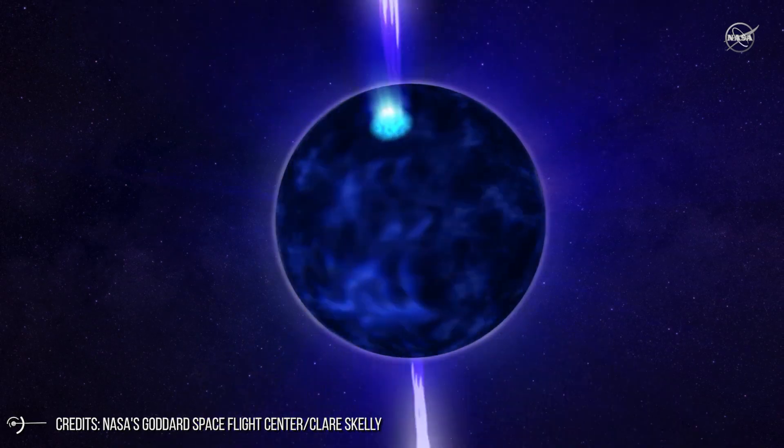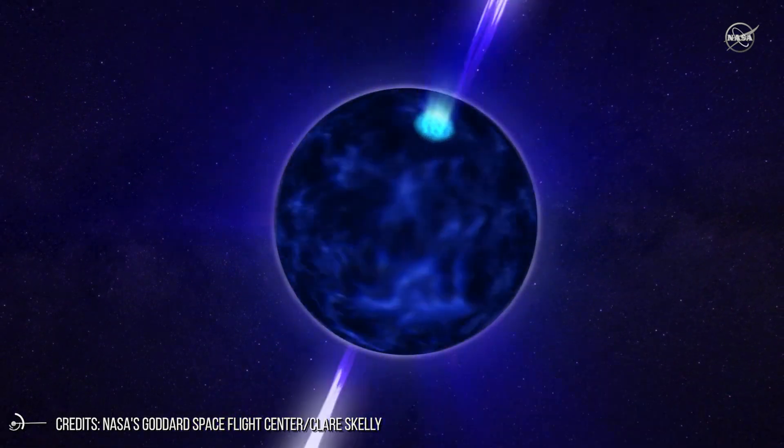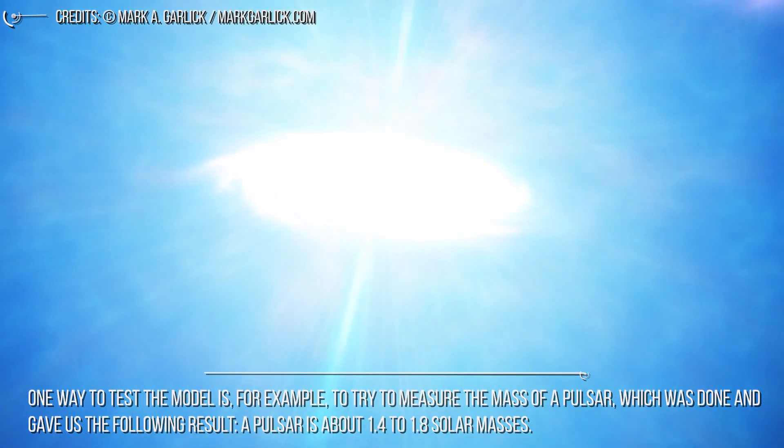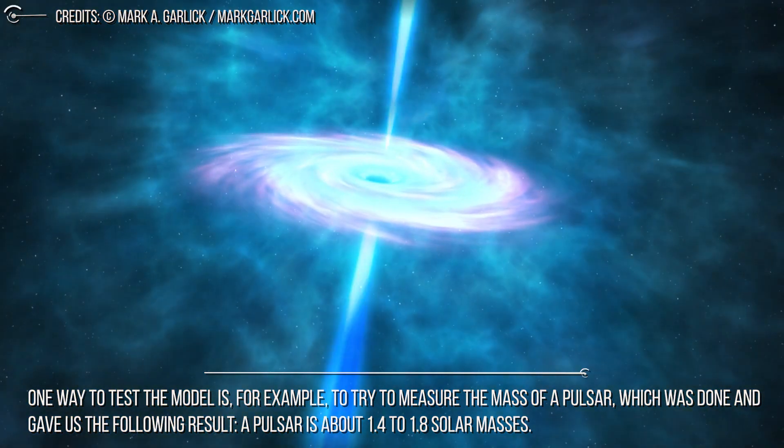But what evidence do we have that it is the correct model? This is a question that astronomers ask themselves. One way to test the model is, for example, to try to measure the mass of a pulsar, which was done and gave us the following result.